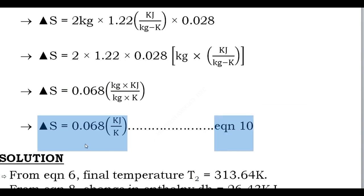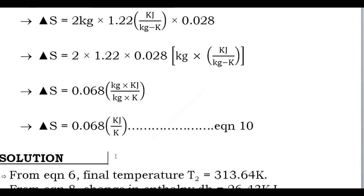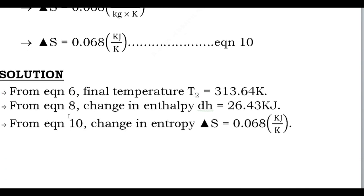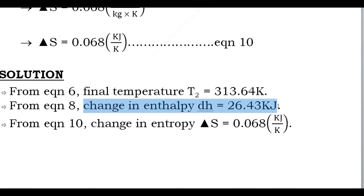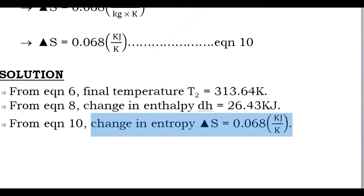We have found all the answers. Final temperature T2 = 313.64 K. Change in enthalpy ΔH = 26.43 kJ. Change in entropy ΔS = 0.068 kJ/K. This brings an end to the explanation of this problem. I hope you all understood. If you have any doubts, please comment in the comment box. Remember to like, share, and comment on our videos. Thank you friends.